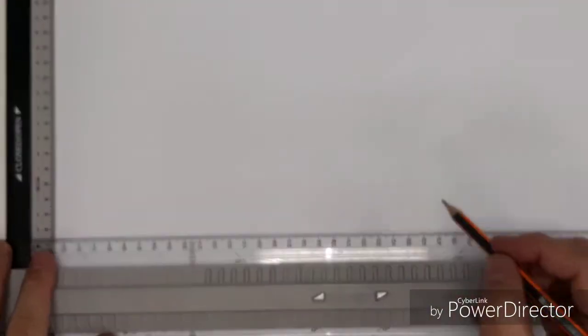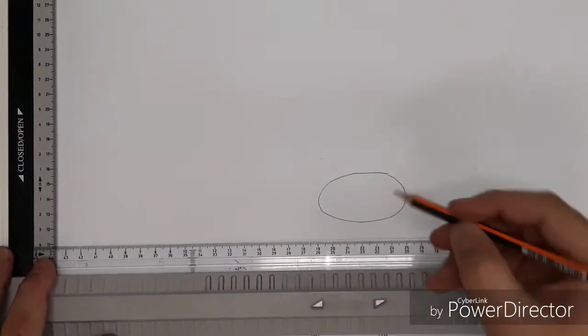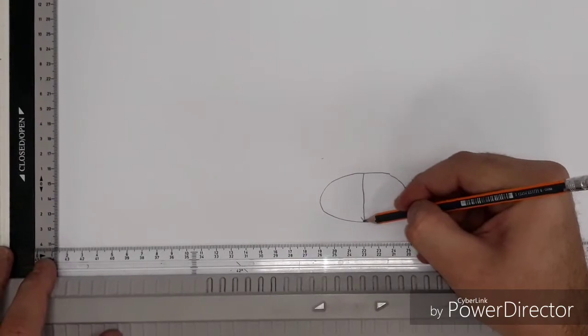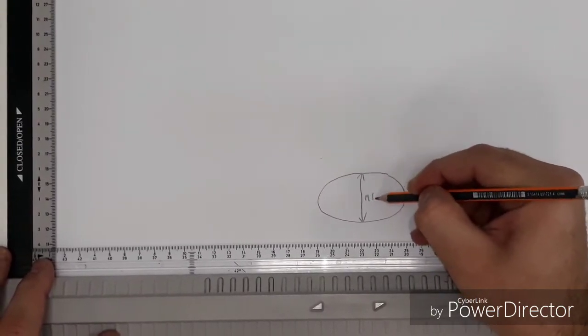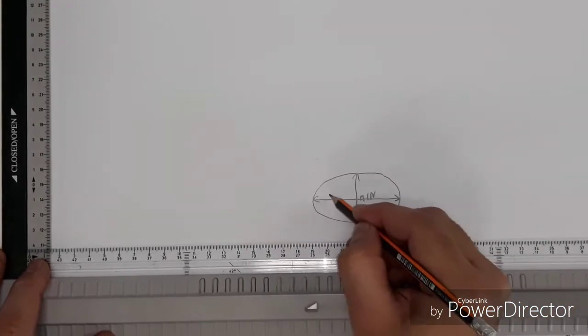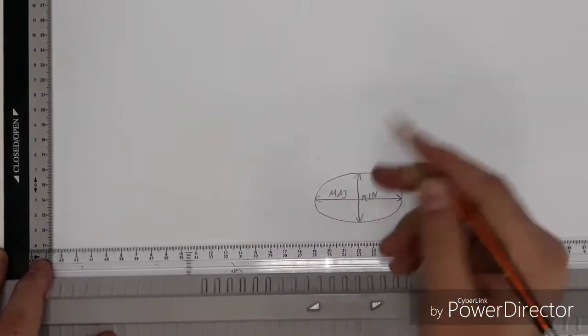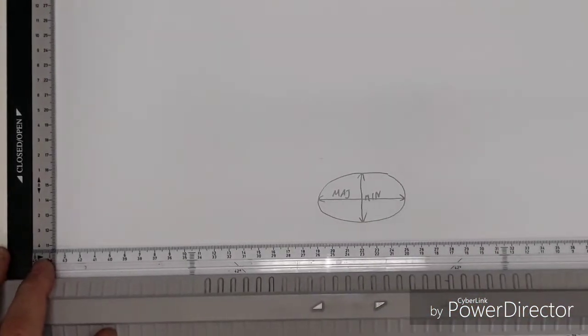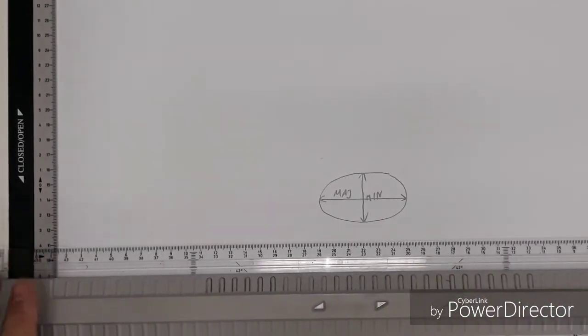Let's recap. An ellipse is basically a squashed circle or an oval and contains a minor and major axis. Theoretically, these are two diameters of an oval or an ellipse shape.